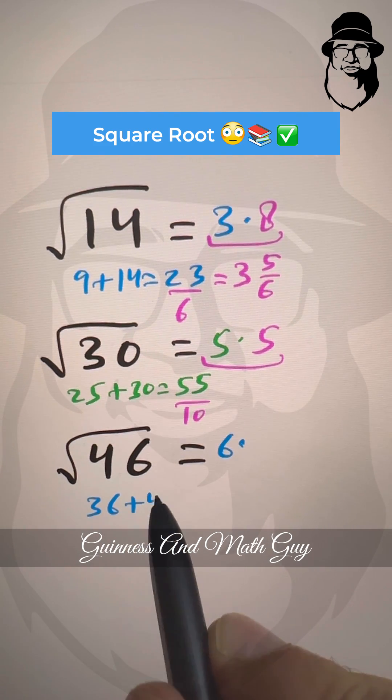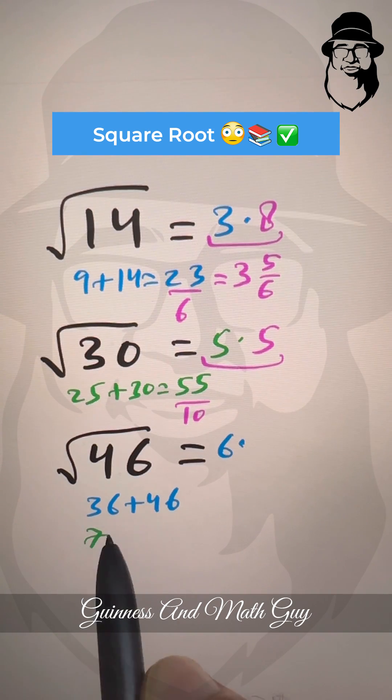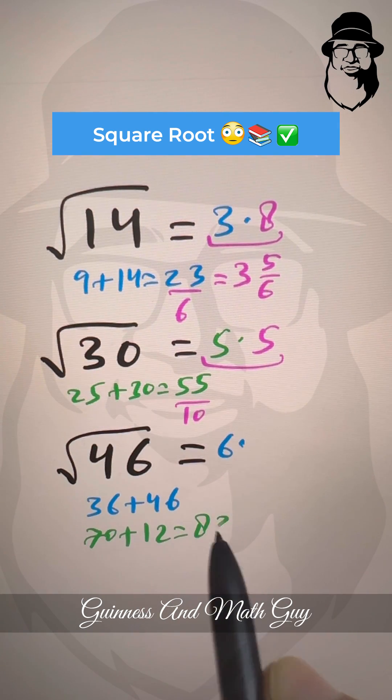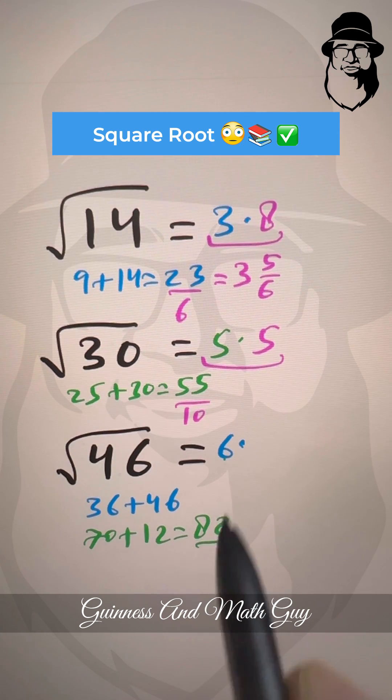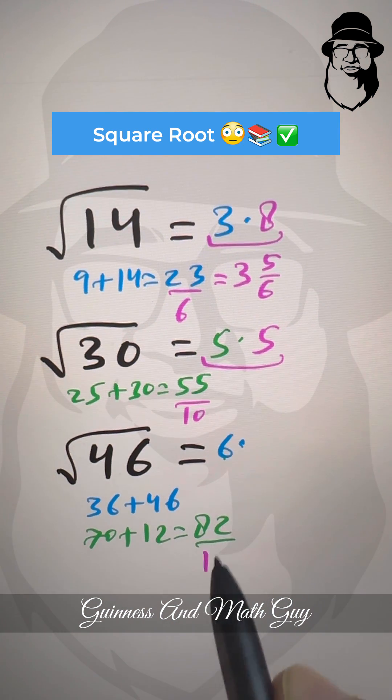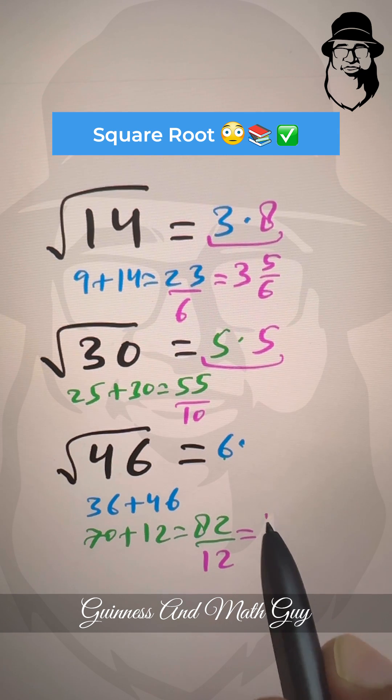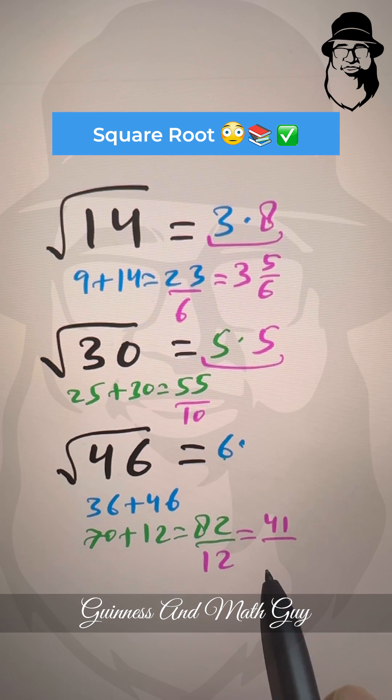So 36 plus 46 is easy. 30 plus 40 is 70, and 6 plus 6 is 12. So it's 82 divided by double of this 6, that is 12. So let's half both the numbers. Half of 82 is 41, and half of 12 is 6.